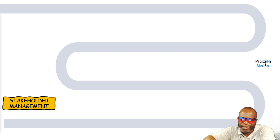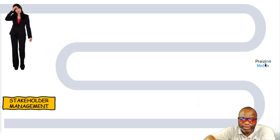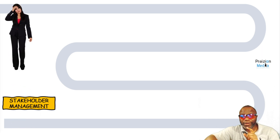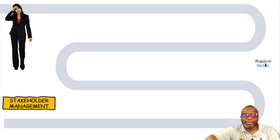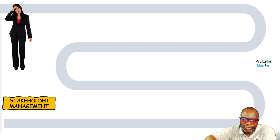Stakeholders are individuals or entities who are affected by the project, or who could affect the project. They also include those who think that they could be affected by the project. So the project manager has quite a bit of work to do here.